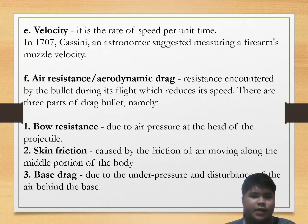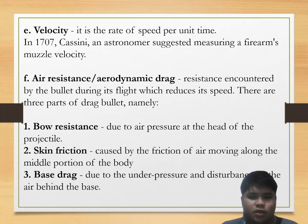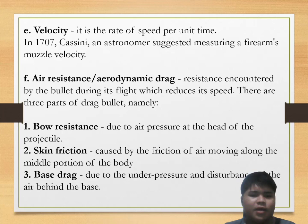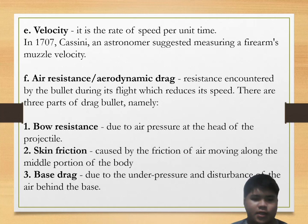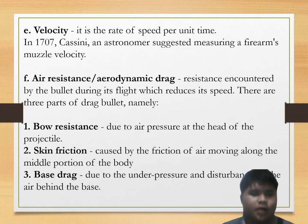Velocity is the rate of speed per unit time. In 1707, Cassini, an astronomer, suggested measurements of firearms muzzle velocity. Next is air resistance or aerodynamic drag — the resistance encountered by a bullet during its flight, which reduces its speed. There are three parts of bullet drag: bore resistance from the pressure at the head of the projectile, skin friction caused by air moving along the middle portion of the bullet's body, and base drag due to the under-pressure and disturbance of air behind the base of the bullet.